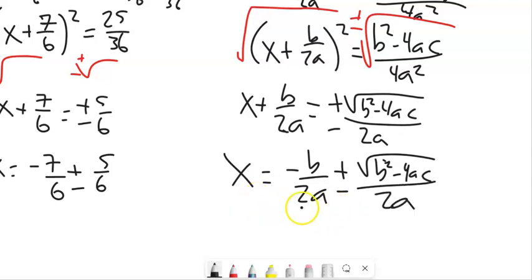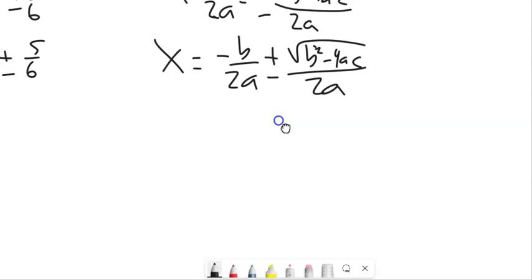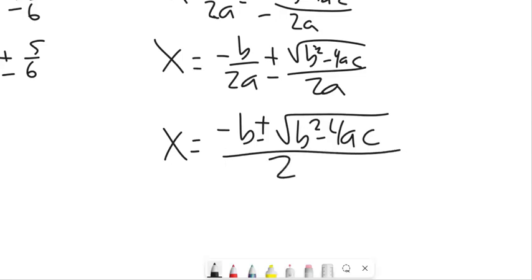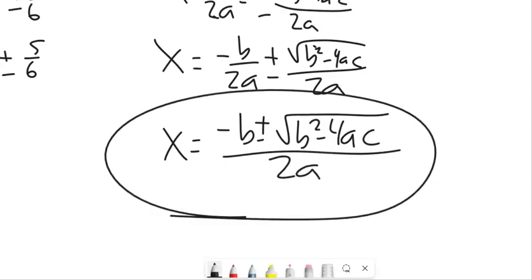So I get negative B over 2A plus or minus square root of B squared minus 4AC all over 2A. And now since those have a common denominator, I can combine them into negative B plus or minus the square root of B squared minus 4AC all over 2 times A. Anyway, that's the quadratic formula.